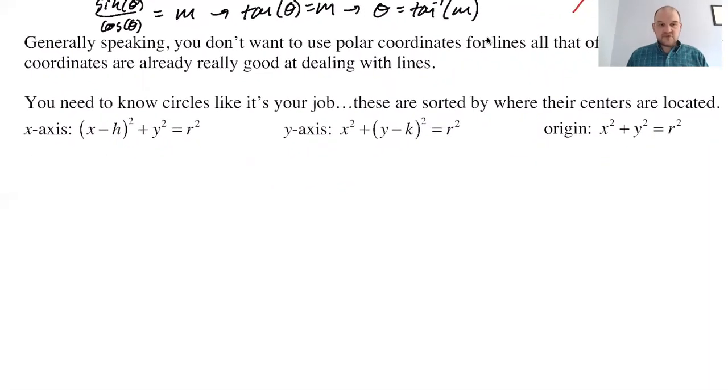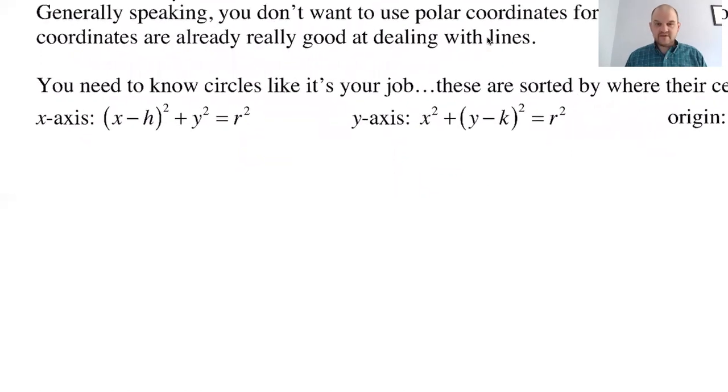So your constant functions in polar are r equals a constant and theta equals a constant. Just like in rectangular, your constants are y equals a constant and x equals a constant. They're vertical and horizontal lines. But our grid system in rectangular is based on vertical and horizontal lines. In polar, our grid system is based on concentric circles and radial lines usually associated with the unit circle. That's why these are super important lines. So this one you should memorize.